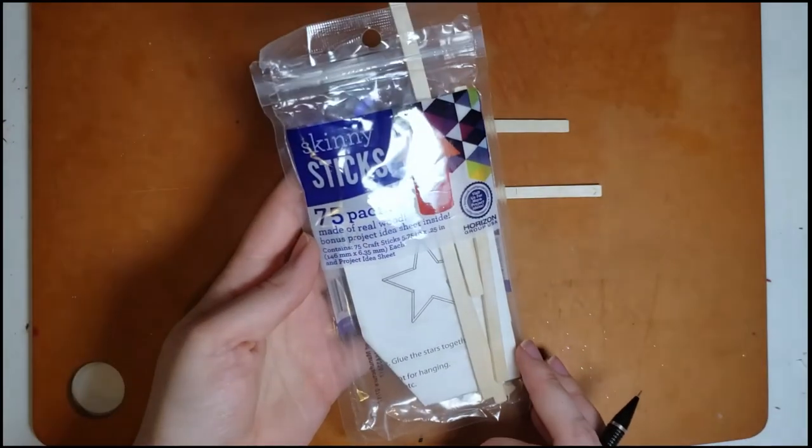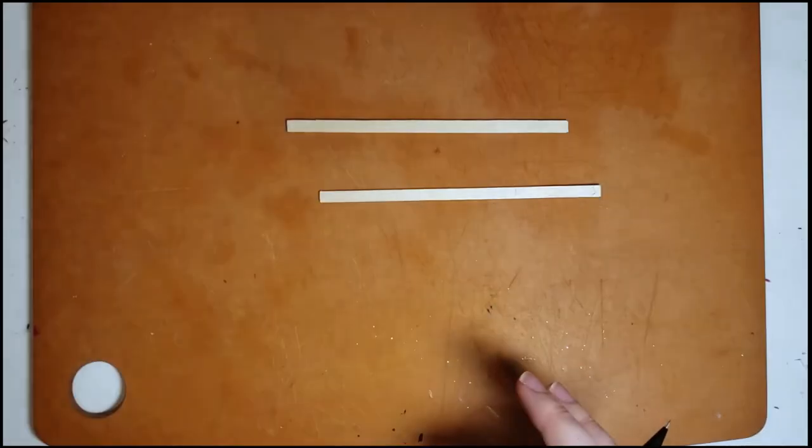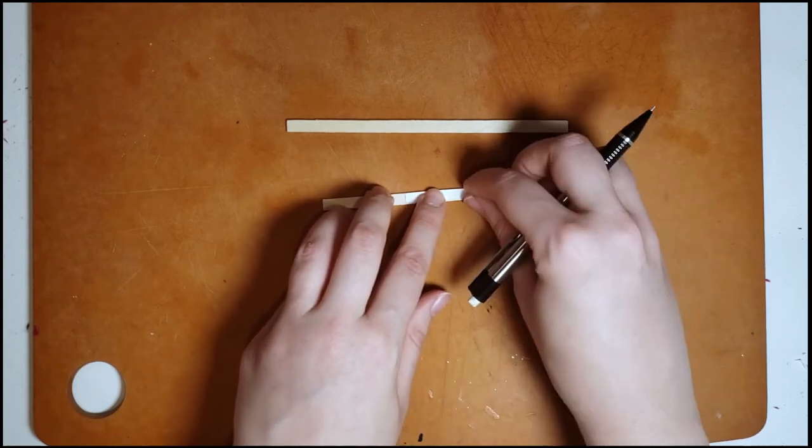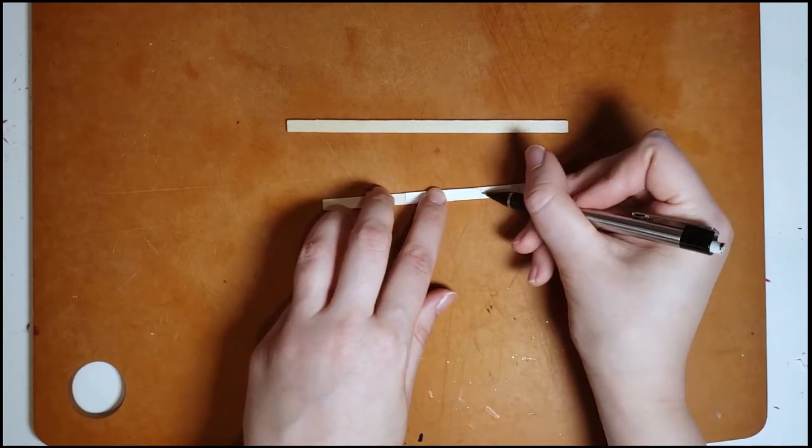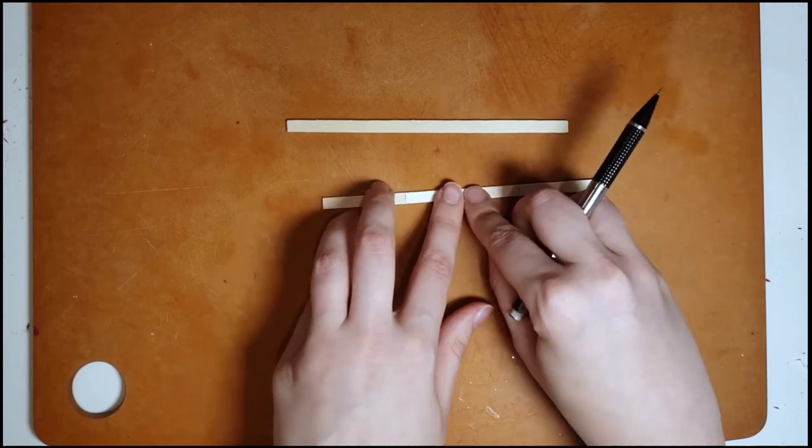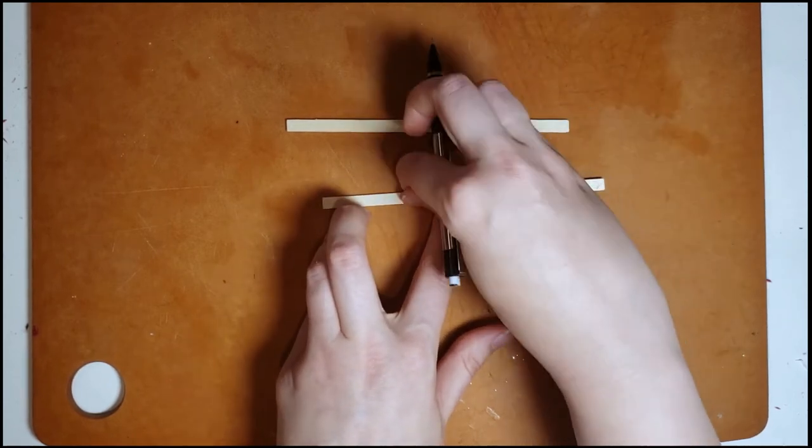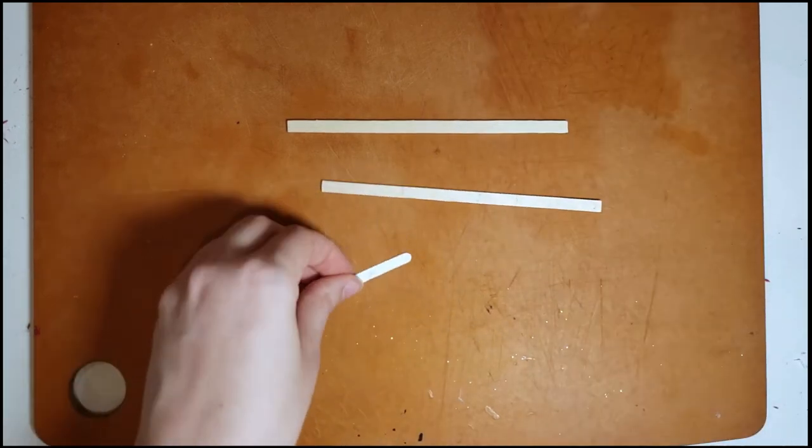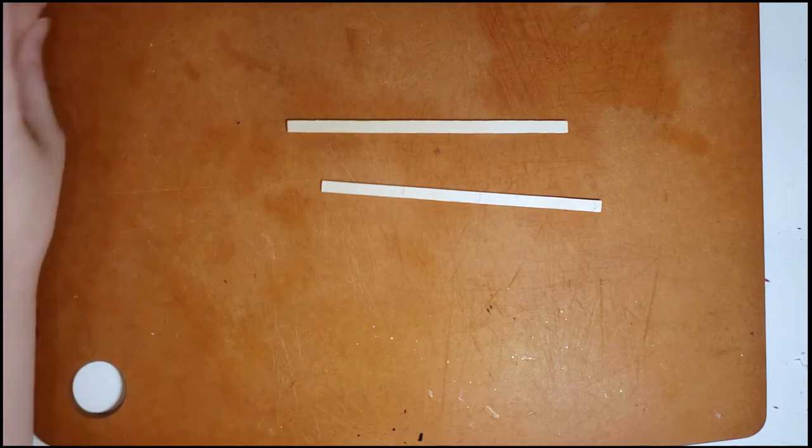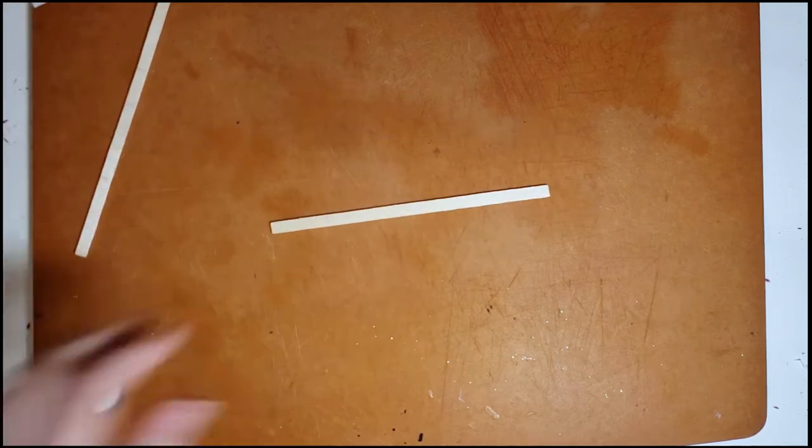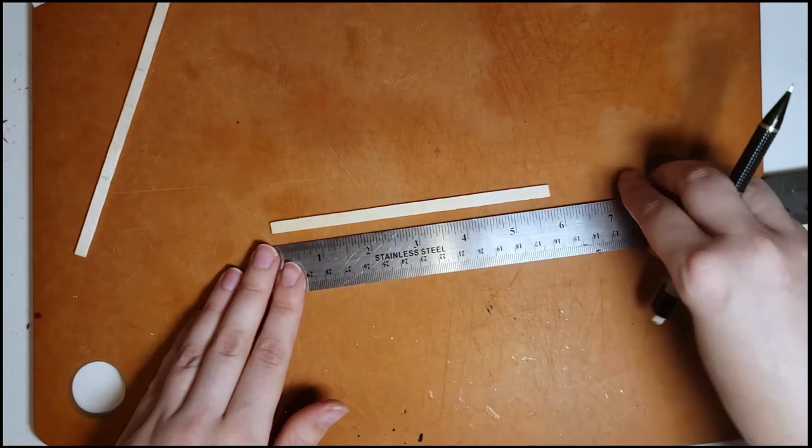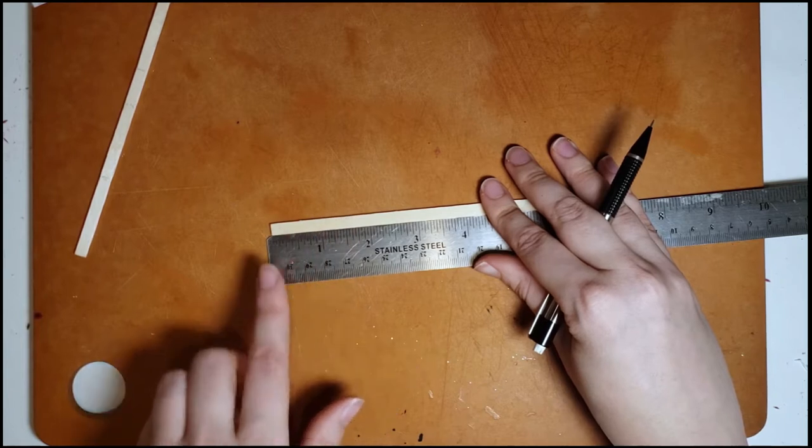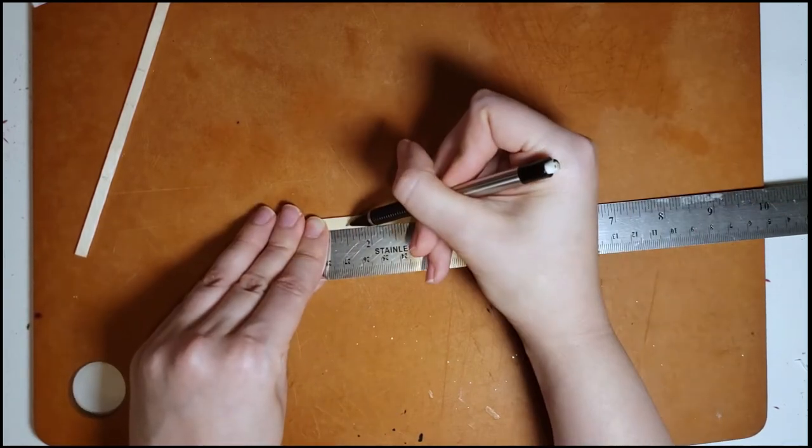I guess they call them skinny sticks at Walmart. I don't know about the dimensions on the stir sticks that you can get in the grocery aisle. I assume they're similar. I find that these are a bit wider than what I wanted so I actually do trim them a little bit, but if you're using a ruler what you can do is they are one and a half inches.